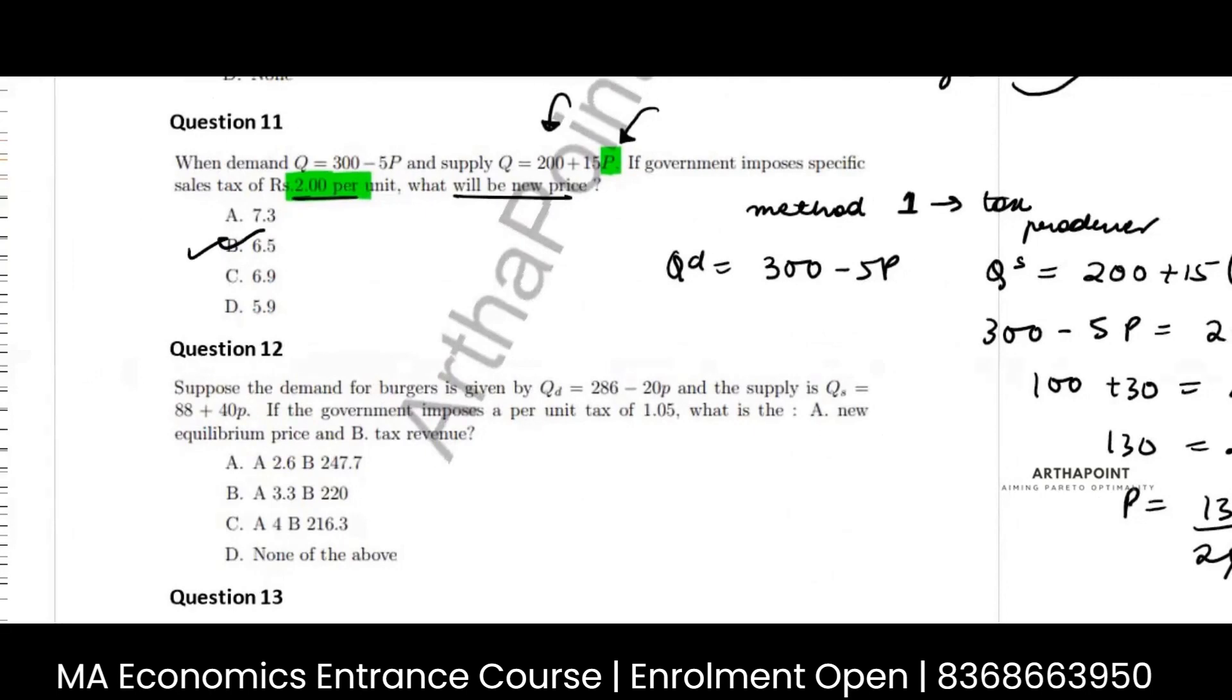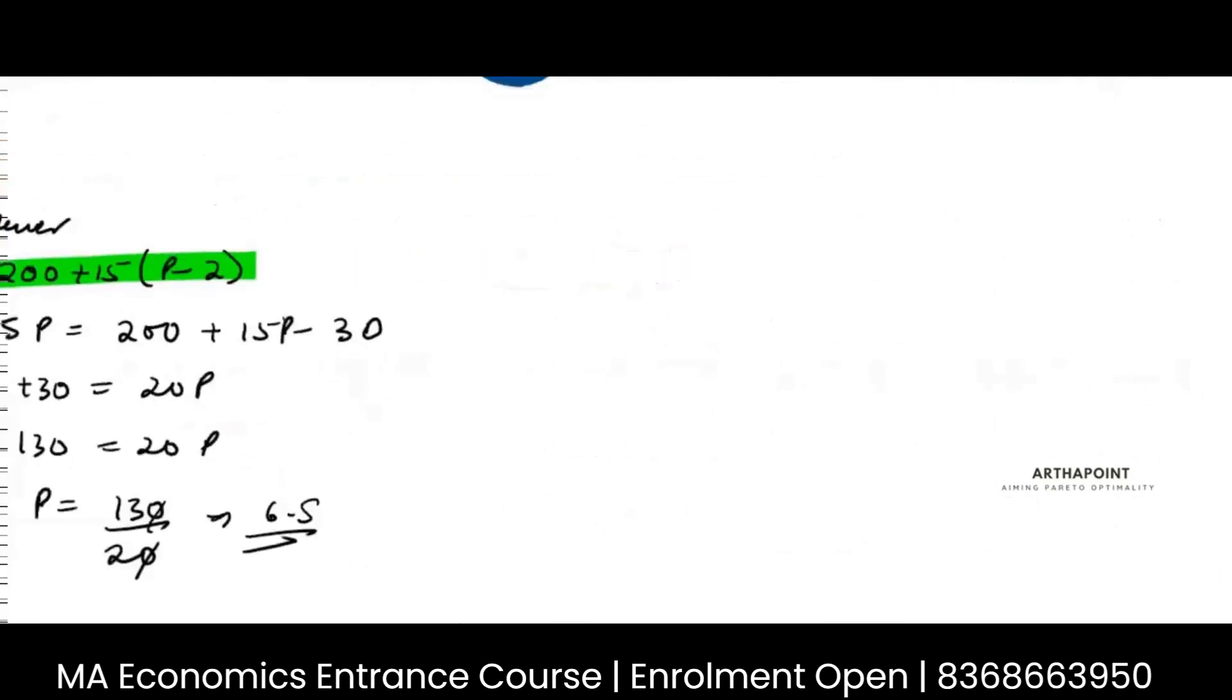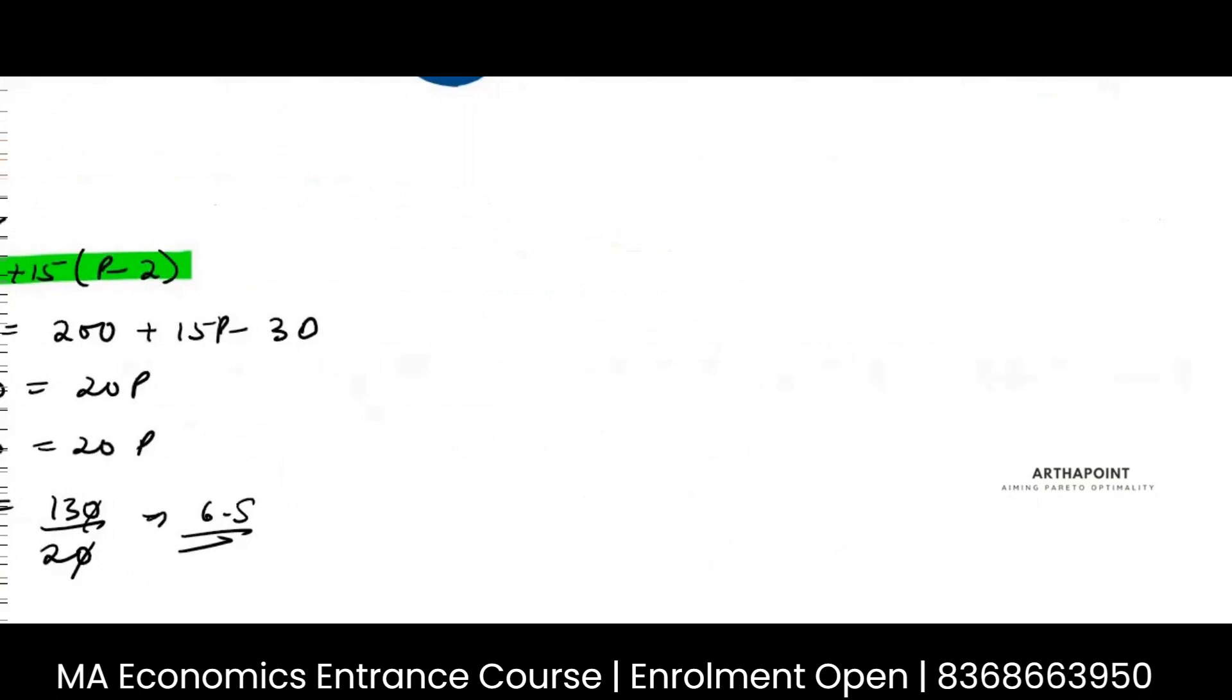If I put the tax on the side of the producer, then diagrammatically I am here. This is my supply, demand. I've put a tax on the supplier. So the supply curve has shifted backwards. This is my new price that I have determined.